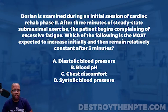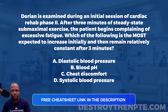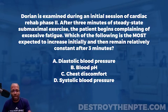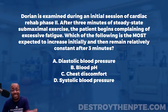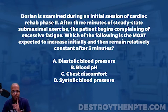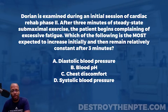For this week's challenge Wednesday, we have our patient Dorian. Dorian is examined during an initial session of cardiac rehab phase two. After three minutes of steady state submaximal exercise, the patient begins complaining of excessive fatigue. Which of the following is most expected to increase initially and then remain relatively constant after three minutes? A: diastolic blood pressure, B: blood pH, C: chest discomfort, D: systolic blood pressure.